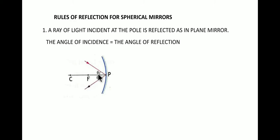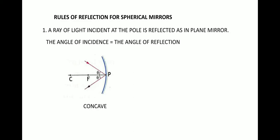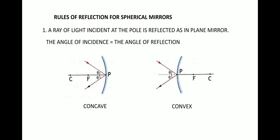The angle formed here, marked by theta, is the angle made by the incident ray and the principal axis — this is called the angle of incidence. When it reflects back it forms another angle with respect to the principal axis, called the angle of reflection. The angle of incidence equals the angle of reflection, so both are marked theta. This is true for the concave mirror and similarly for the convex mirror — the incident ray forms angle theta and the reflected ray again forms angle theta.